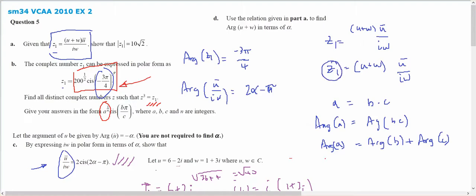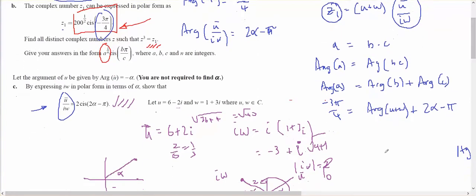So I'm calling A, Z1, and the argument of A will be minus 3 pi on 4. Now, I'm calling B, U plus W. And I'm calling C, this, and I know that is plus 2 alpha minus pi, which means using some level of algebra argument of U plus W will equal pi minus 2 alpha minus 3 pi on 4.